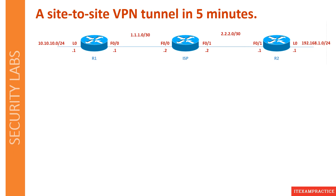Here is our topology. We have R1 and R2, and here is our ISP. We want to create a secure tunnel between these two routers. It means that I have my private network 10.10.10.0 and I want to access the private network 192.168.1.0. I will need a site-to-site VPN tunnel to make this happen.